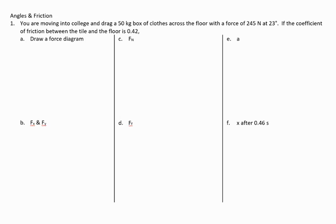You're moving into college and you drag a 50 kilogram box of clothes across the floor. So we know right away that's going to be our mass, with a force of 245 newtons at 23 degrees. This is going to be our applied force. If the coefficient of friction between the tile and the floor is 0.42, this is going to be our mu value. First, we want to draw a force diagram.